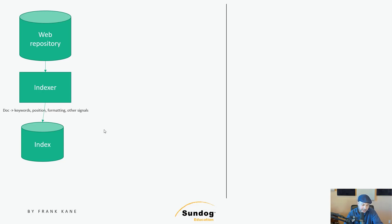In the end, we want an inverted index that maps keywords to a ranked list of documents. So if we can keep that sorted by keyword as we go, that will save us some trouble, but we could do it later if we had to. As for the indexer itself, I think that's why Google invented MapReduce — in order to parallelize the processing of documents in the web repository. A more modern alternative today would be Apache Spark, which is faster and gives us more flexibility and built-in tools.